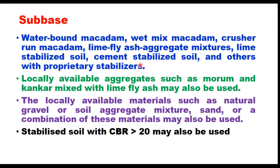The specifications allow use of locally available aggregates such as mooram and kankar mixed with lime or fly ash. Local natural gravel, soil-aggregate mixture, or even sand can be used as subbase material. If natural material is not available, soil can be stabilized with lime or cement to attain a CBR value of 20%, and then it can be used as subbase material for cell-filled concrete pavement.